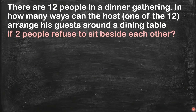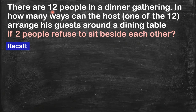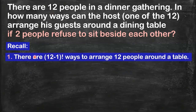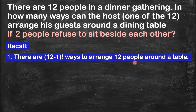Let's try the same problem but this time with a different condition. This time, 2 people refuse to sit beside each other. So first, I want you to recall how many ways there are to arrange 12 people in a circular manner. You simply use the circular permutation formula, which is (N − 1) factorial — so 12 minus 1, or simply 11 factorial ways to arrange 12 people around a table. Now I also want you to recall how to get the number of arrangements if we want 2 people to sit beside each other.